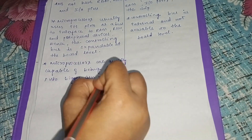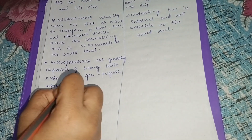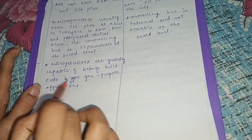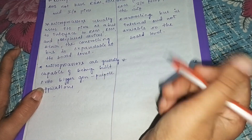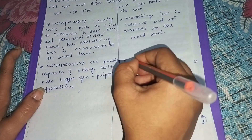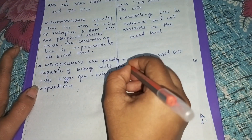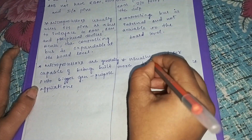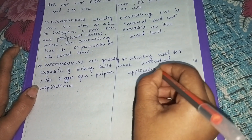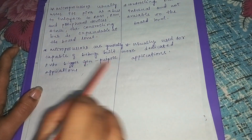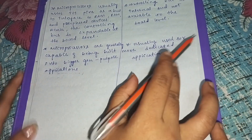The third point: microprocessors are generally capable of being built into bigger, general-purpose applications. Microcontrollers, on the other hand, are usually used for more dedicated applications.